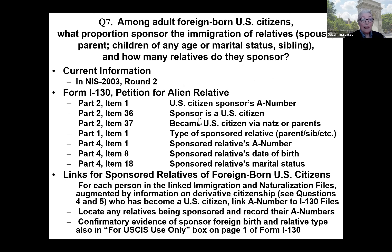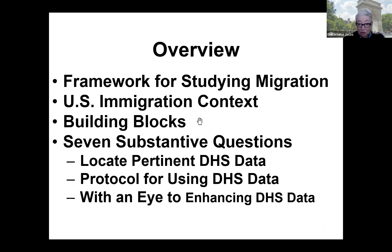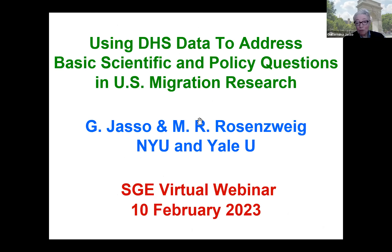Seventh and last question: Among adult foreign-born U.S. citizens, what proportions sponsor the immigration of relatives, and how many relatives do they sponsor? Citizens can sponsor a broader range of relatives than LPRs. There are many more questions of great interest, but I will stop here with these seven. Thank you very much — I look forward to Steve's comments and to all of your questions and comments.